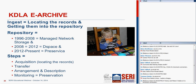Following Veronica's outline, with ingest I'm adding a piece which is locating the records—that's what I'm going to talk about most. I also want to point out the repository structure in Kentucky: the elements I have listed are not separate from each other but built on top of each other. They still have the network storage even though they have DSpace, even though they have Preservica. Part of that is because it gives us three copies of records in three different spots, with Preservica providing geographic dispersion as well.